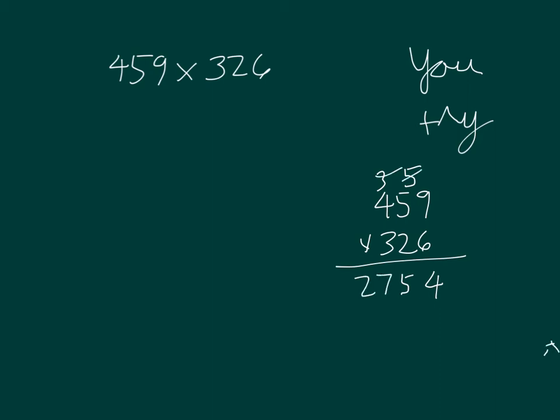Cross out those regroups, place the 0. 2 times 9 is 18, 8 regroup of 1. 2 times 5 is 10 plus 1 is 11, 1 regroup of 1 and 2 times 4 is 8 plus 1 is 9.